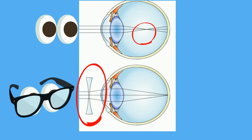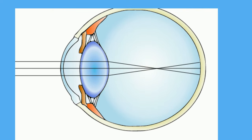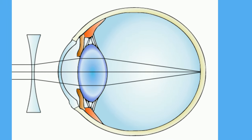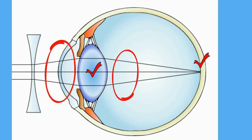Since the nature of the problem of nearsightedness is that the light is focused in front of the retina, a diverging lens, which a concave lens is, will serve to diverge the light before it reaches the eyes. The light will then be converged by the lens, which is convex, to produce an image on the retina.